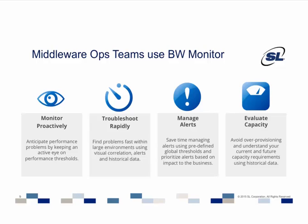Our traditional audience includes a lot of middleware operations teams, though front-line support uses it in an end-to-end context, and application architects and Tier 3 support also use it for rapid troubleshooting. For middleware operations teams, they're able to anticipate performance problems by proactively monitoring how close performance is to a given threshold — so if you can identify an error condition or close proximity early enough, you can nip it in the bud before it affects the overall application performance.